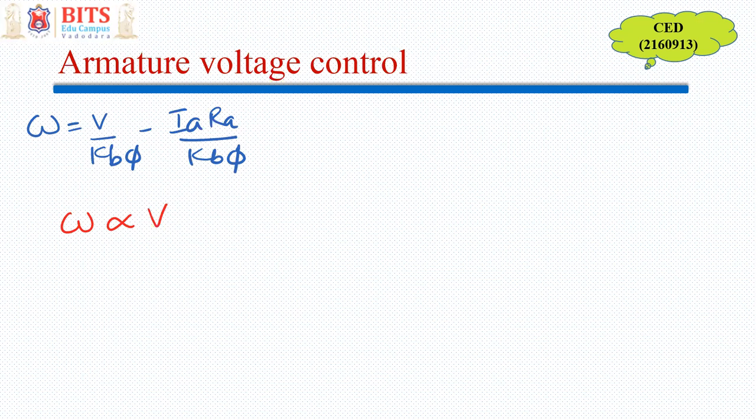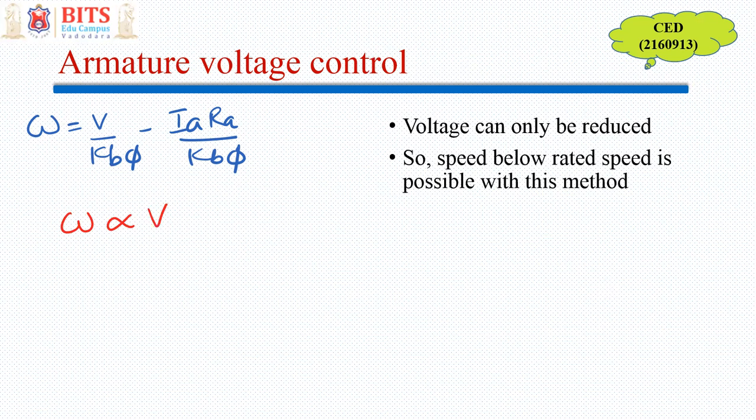That insulation cannot withstand voltage more than that, otherwise it will get damaged and so the motor will get permanently damaged. So you can always reduce the voltage but cannot increase it. Then speed below rated speed only is possible, as speed is proportional to voltage. Reduced voltage will give reduced speed only. You cannot increase speed beyond rated speed with this.